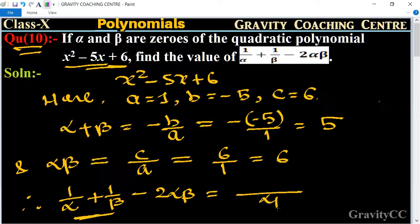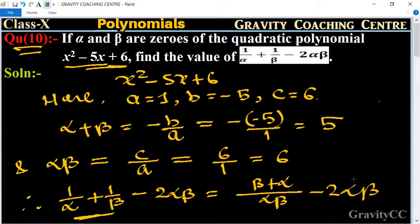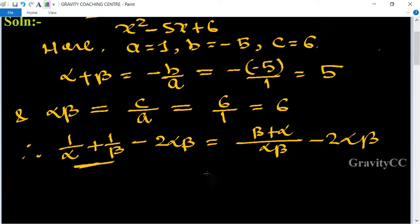The common denominator is αβ, so we get (β + α)/αβ - 2αβ.